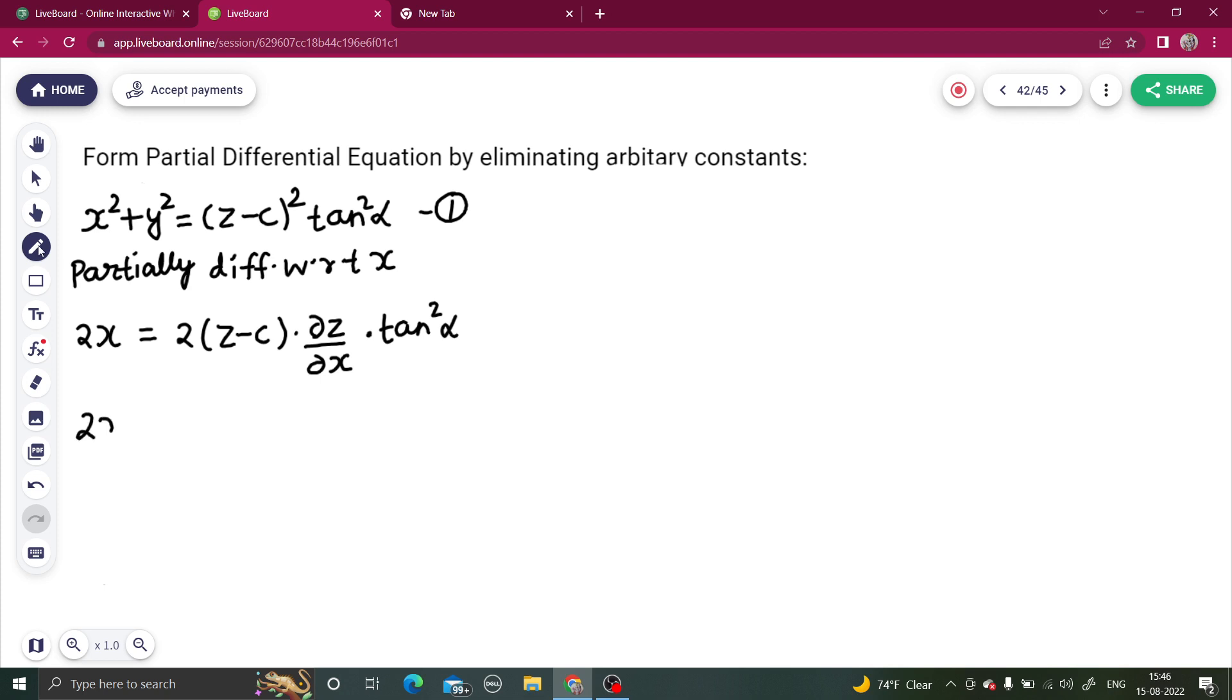You are getting 2x. We can always try to make this a bit simpler. First, by eliminating this 2. You are getting x to be equal to z minus c del z by del x is p times 10 square alpha.